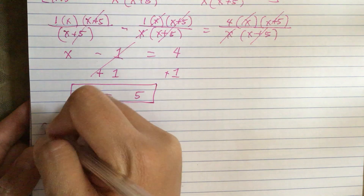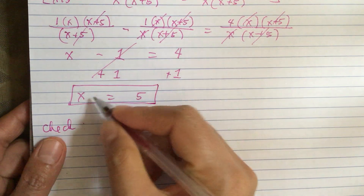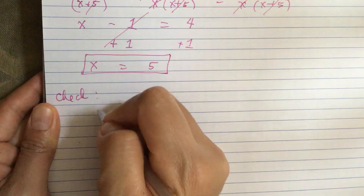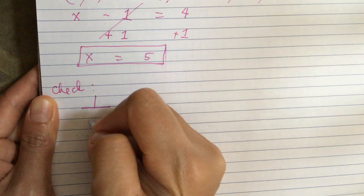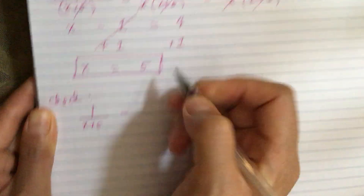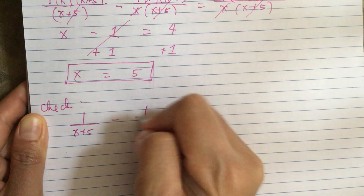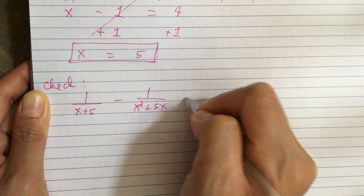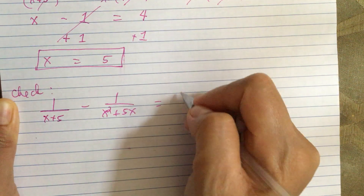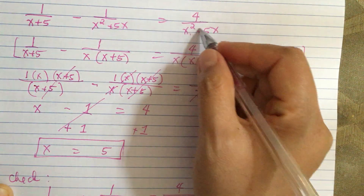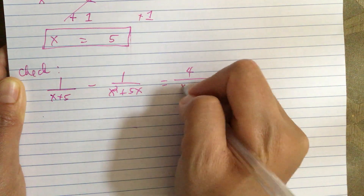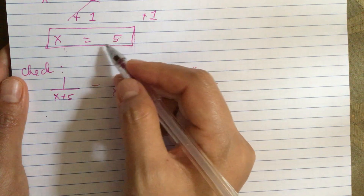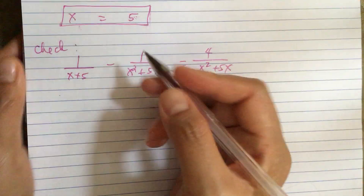Now let's check by plugging x equals 5 back into the original equation: 1 over (x plus 5) minus 1 over (x squared plus 5x) equals 4 over (x squared plus 5x), with x equal to 5.